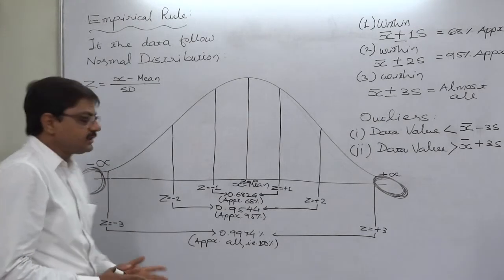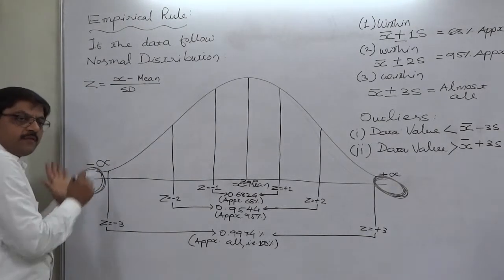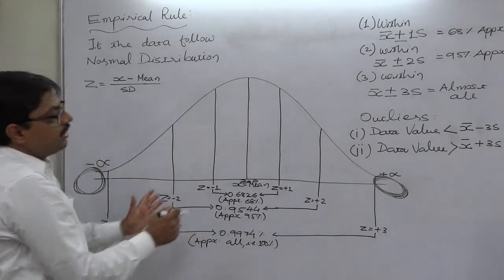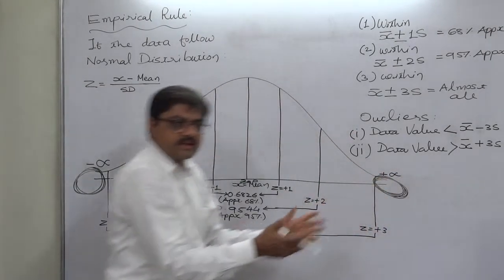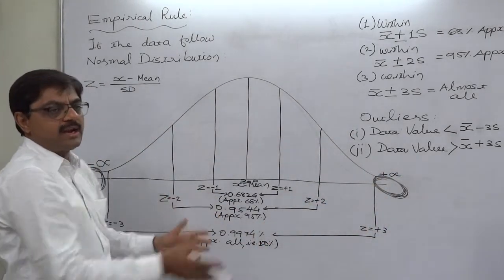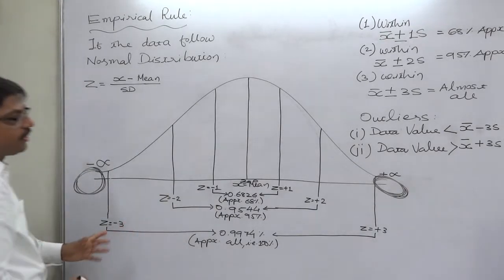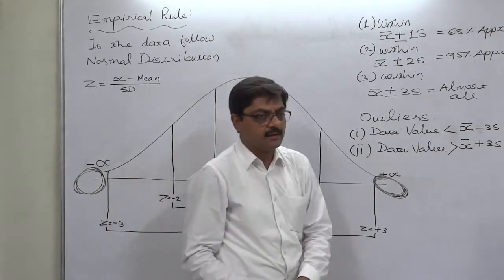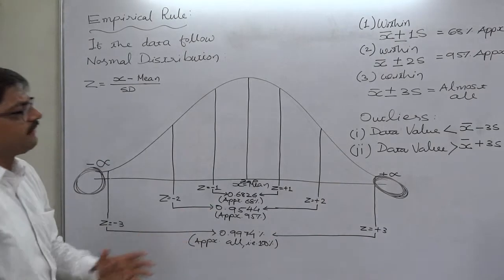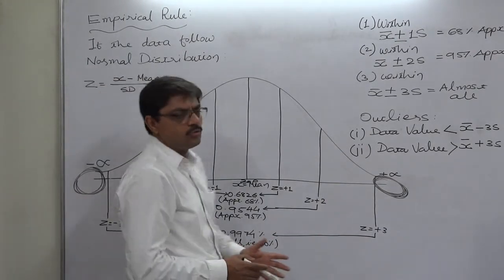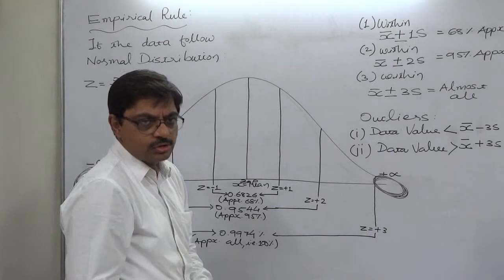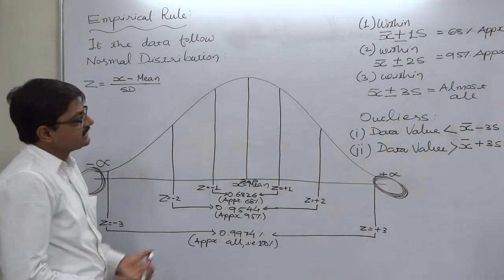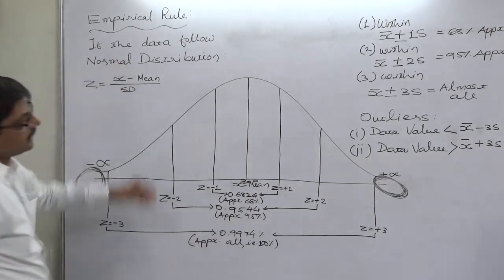If a data value is less than the lower limit or greater than the upper limit, we treat it as an outlier and normally remove it from the data. This is because it is an 'odd one out' — a value so low or so high that it influences the mean or any other measure of central tendency. Removing such values helps the data maintain its symmetry.